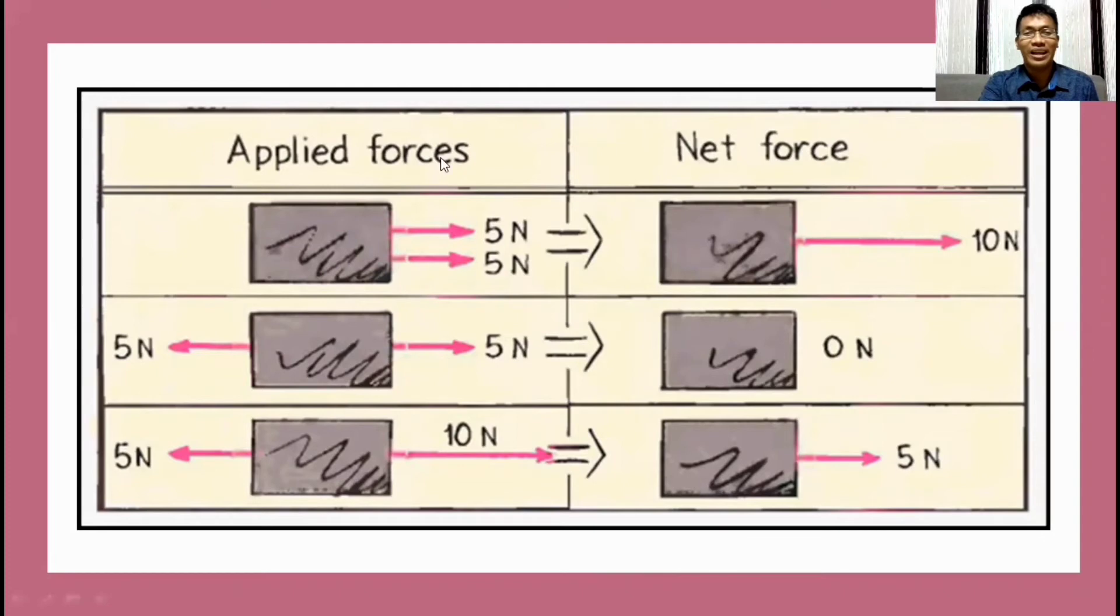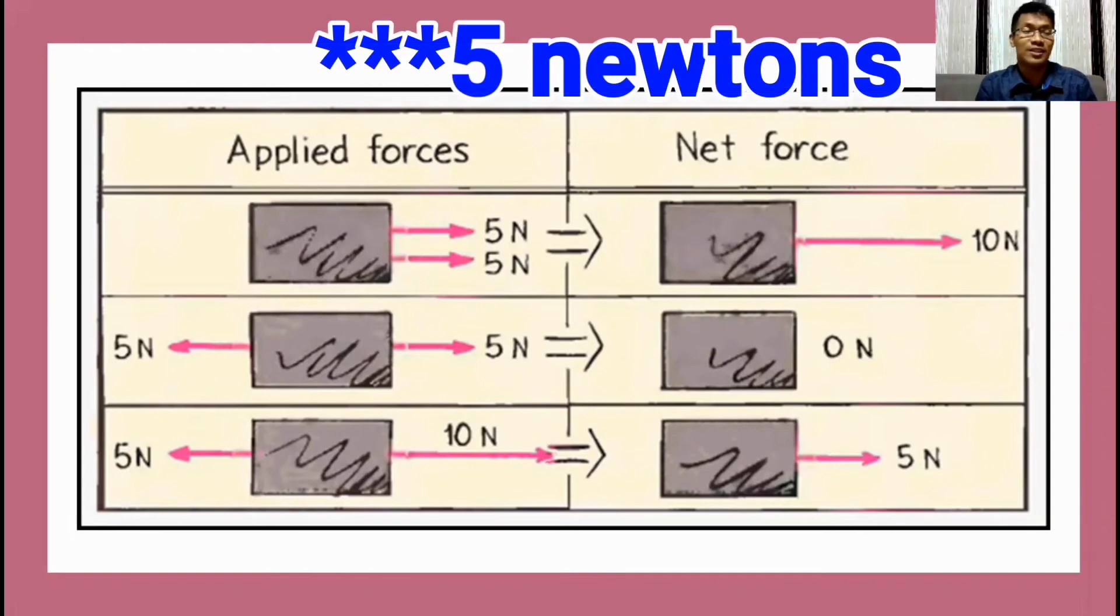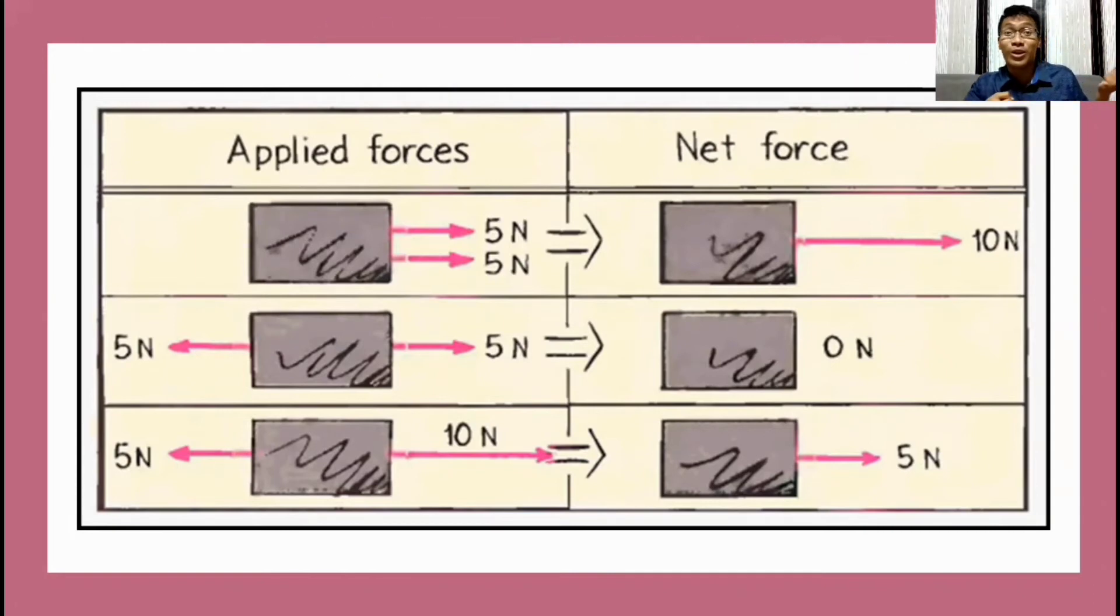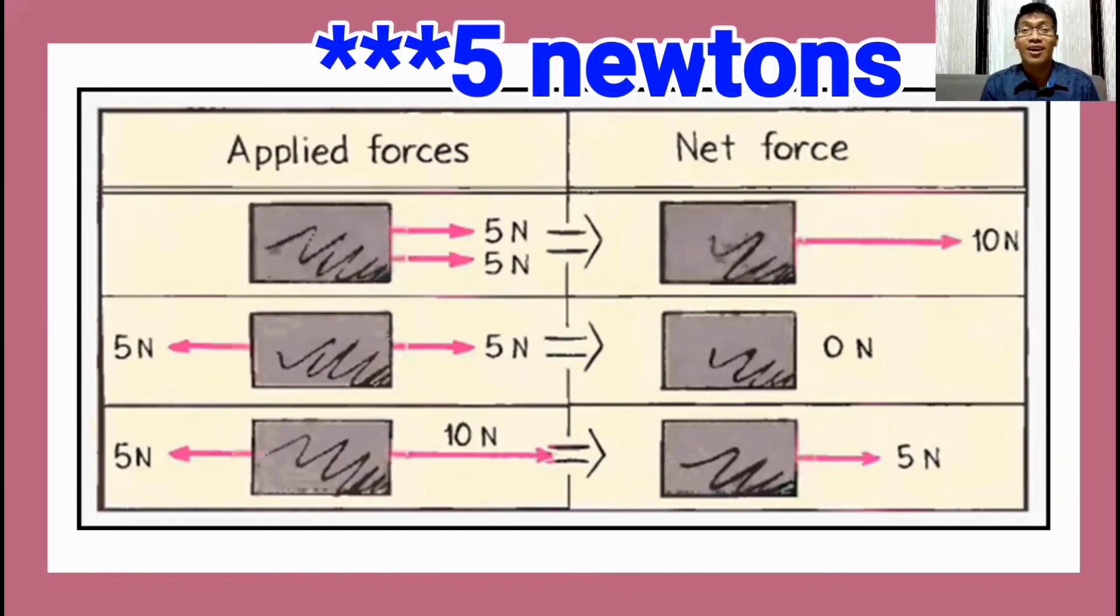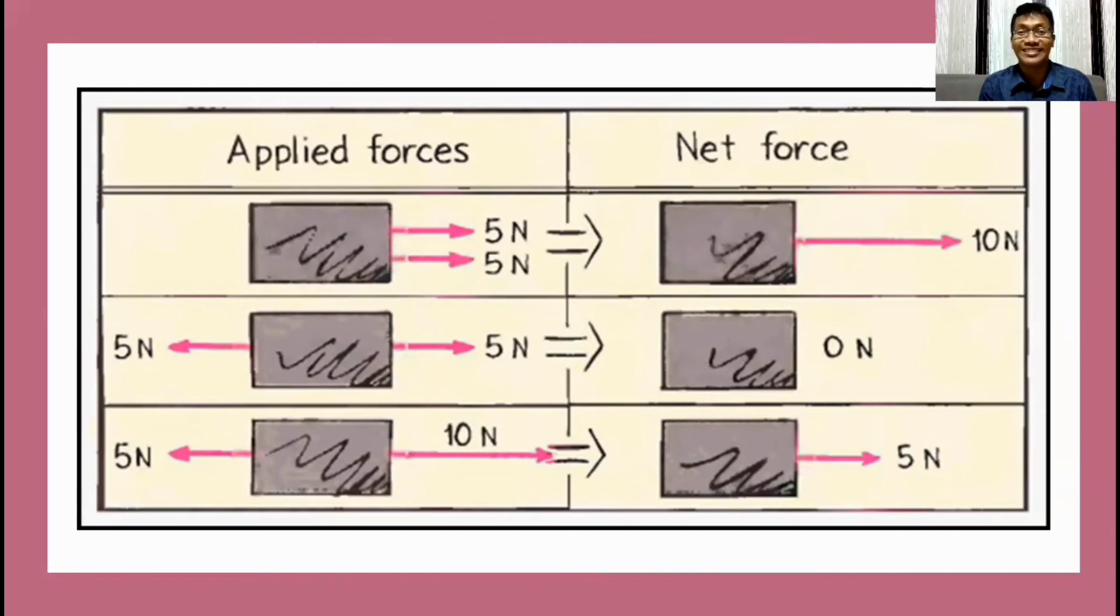In here, we got the applied force and the column for the net force. Let's try to analyze each situation. As we check, we got a pair of force in here. Let's say, for example, one person is exerting five newton which is a force, while the other person is also exerting five newton on the object. Since they are on the same direction...